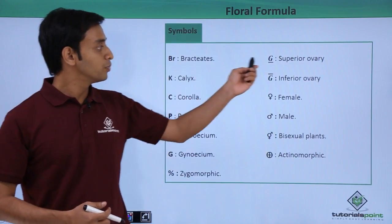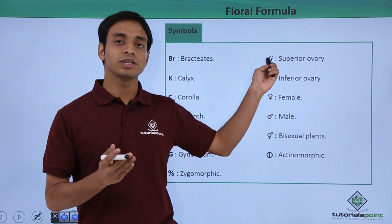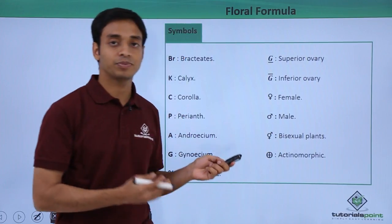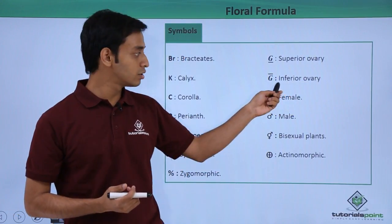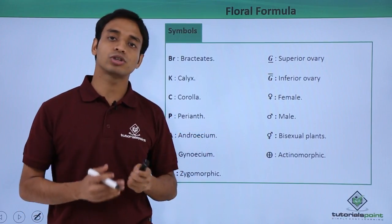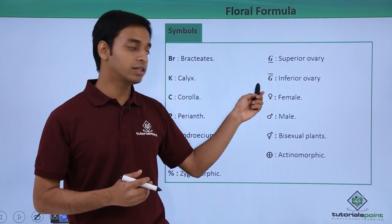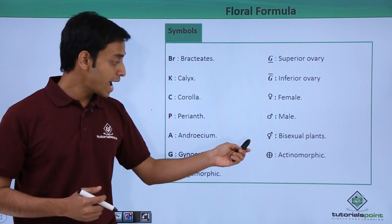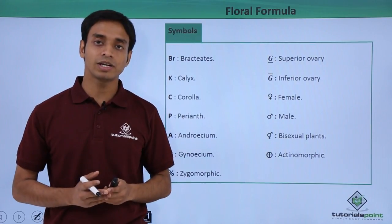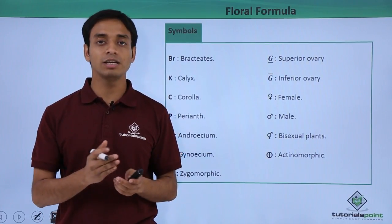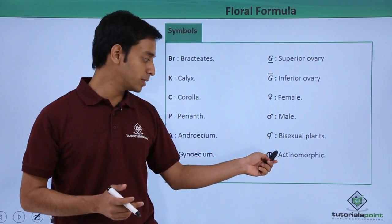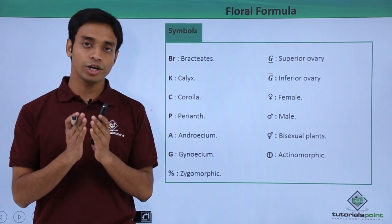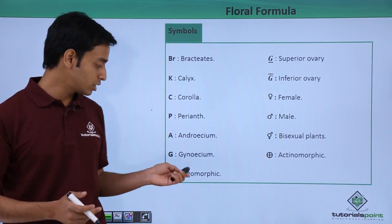Capital 'G' represents the female part, the gynoecium. For a superior ovary — present above all other floral parts — 'G' is written with a dash at the lower part. For an inferior ovary, 'G' is written with a bar at the upper portion. The female symbol, male symbol, and a combination of both represent bisexual flowers. Actinomorphic flowers, which are radially symmetrical and can be divided into two equal halves on any plane, use a specific symbol, while zygomorphic flowers, which are bilaterally symmetrical and can only be divided on a single plane, are represented by a percent sign.